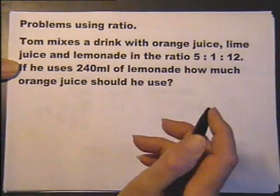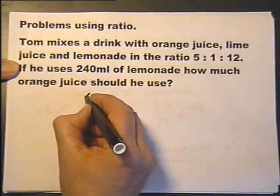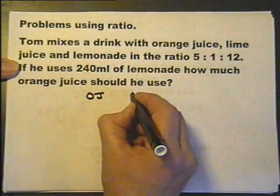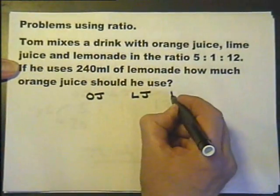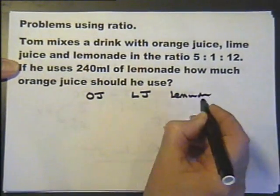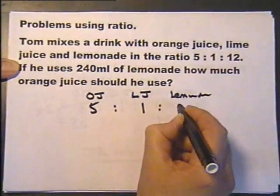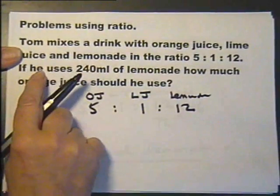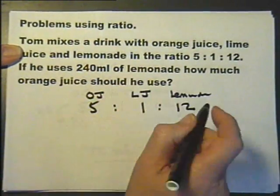So, this is Tom again. Still mixing his orange juice, his lime juice and his lemonade in the ratio of 5 to 1 to 12. If he uses 240 milliliters of lemonade.